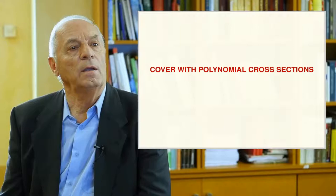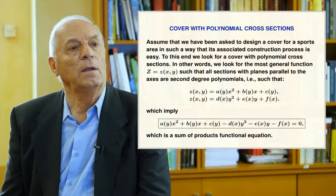We introduce first the problem of designing a cover with polynomial cross sections. Assume we have been asked to design a cover for a sports area such that its construction process will not be very difficult. We look for a cover with second-order polynomial cross sections — that is, the most general function c of x and y such that all cross sections with planes parallel to the reference planes are second-degree polynomials. Since both expressions must provide the same equation, we subtract them and make them equal to the zero function. This equation must be satisfied for all x and y values.